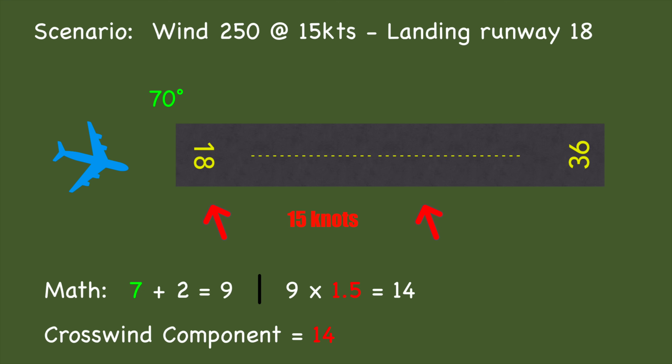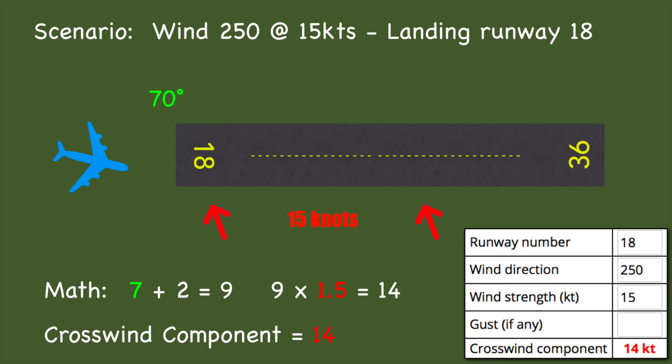Another scenario: wind is 250 at 15 knots, landing on runway 18. You have a 70-degree difference. Down to the math: 7 plus 2 equals 9, 9 times 1.5 equals 14. Now, I'm not great with decimal multiplication, so I go: 9 is close to 10, and 10 times 1.5 is 15, then I drop a knot — so 14. The crosswind component is 14 knots, and the computer says the exact same thing: 14 knots. Sometimes you'll be right on, sometimes a knot or two off — either way, you just want a basic idea of where you're at.